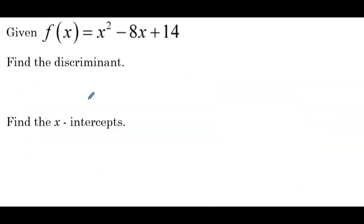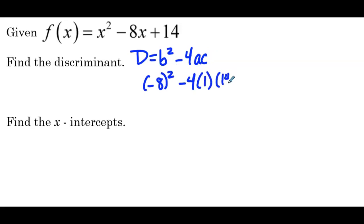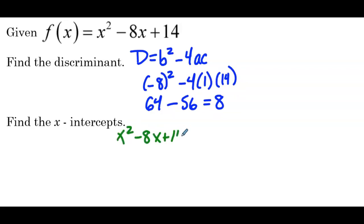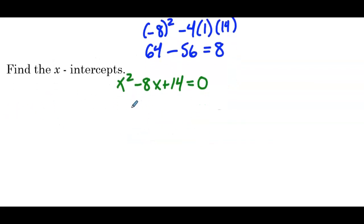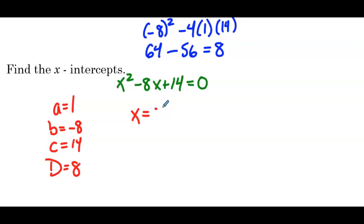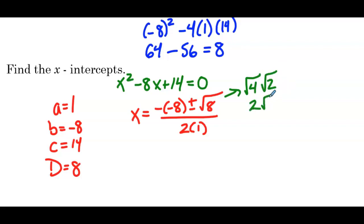Next example: f(x) = x² − 8x + 14. Find the discriminant: b² − 4ac = (−8)² − 4(1)(14) = 64 − 56 = 8. So we don't have a perfect square discriminant. When we set the function equal to 0 and solve for x-intercepts, we'll need to use the quadratic formula, where a = 1, b = −8, c = 14, and the discriminant is 8.